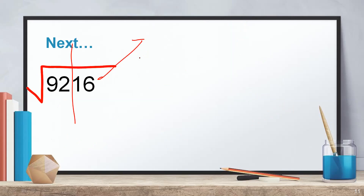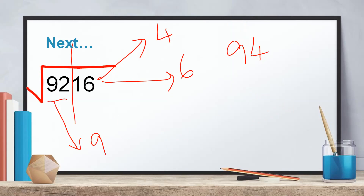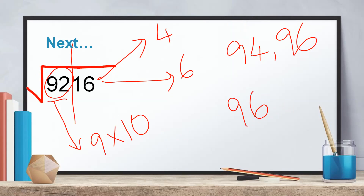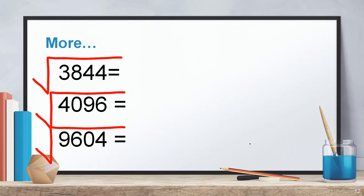Next: √9216. Ends with 6, so the answer ends with 4 or 6. First pair is 92; the perfect square below 92 is 81, which is 9². Choices are 94 or 96. Multiply 9 × 10 = 90. Since 92 is greater than 90, choose the greater answer. √9216 = 96.